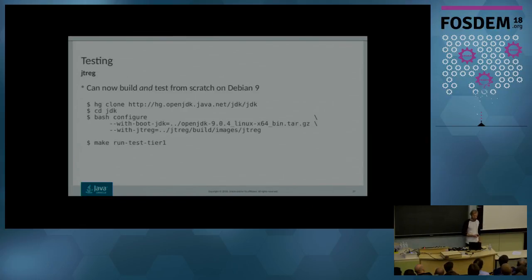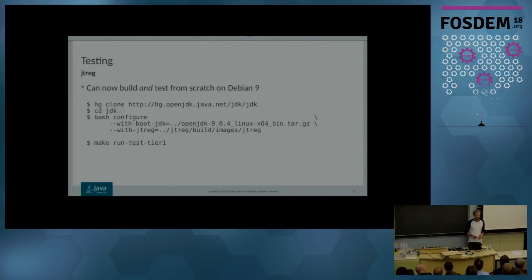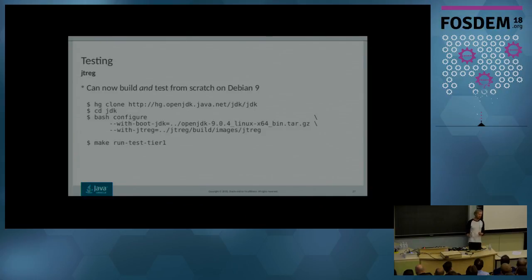The great news is that if you use build-all to build JTReg, you get an image suitable for passing with --with-jtreg to configure. So now, not only can we build OpenJDK from scratch, but thanks to the new build-all script for JTReg, you can build and run tests in very few commands from scratch. Get the source code with a single HG clone, cd into the directory, invoke configure passing the GPL-licensed OpenJDK build as the boot JDK and your recently built JTReg image with --with-jtreg. When you run 'make run-test-tier1', you not only get a proper OpenJDK image but also run all tier-1 tests to verify it holds together.